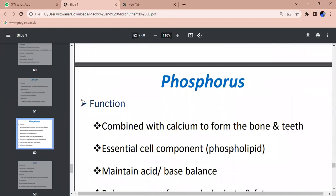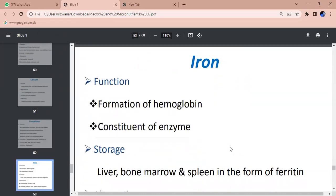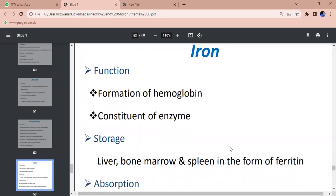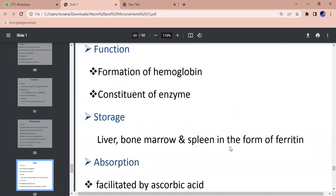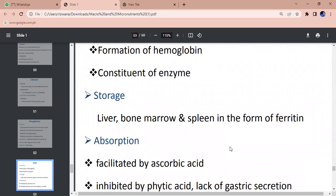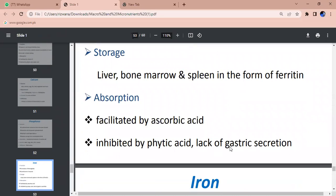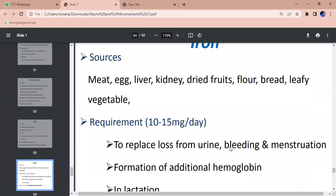Iron - formation of hemoglobin, enzyme constituent. Sources - liver, bone marrow, spleen in the form of ferritin. Ascorbic acid helps absorption. Phytic acid and lack of gastric secretion inhibits it. Sources - meat, egg, liver, kidney, dried fruits, flour, bread, leafy vegetables. Requirement - 10 to 15 milligrams per day to replace loss from urine, bleeding and menstruation, formation of additional hemoglobin in lactation. Deficiency - iron deficiency anemia.